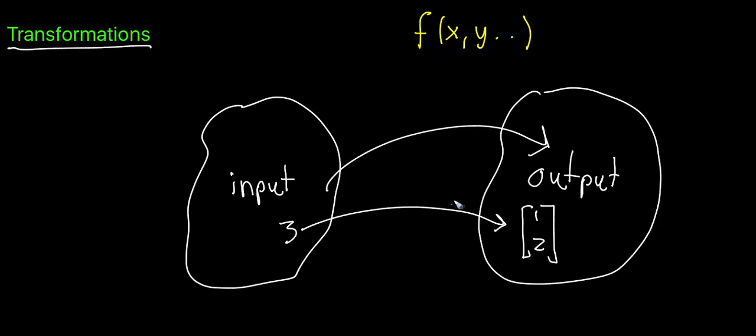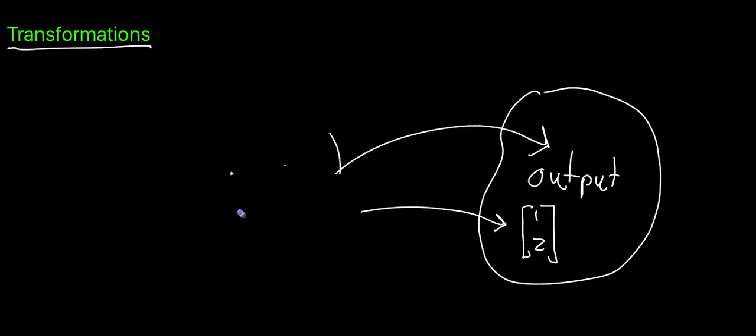The thought behind transformations is that we're just going to watch the actual points of the input space move to the output space. I'll start with a simple example that's just a one-dimensional function with a single variable input and a single variable output.